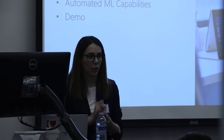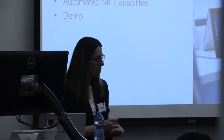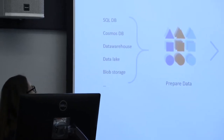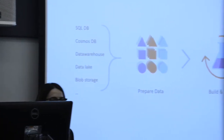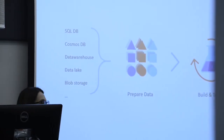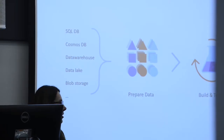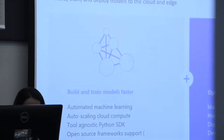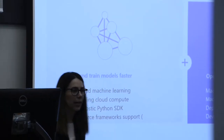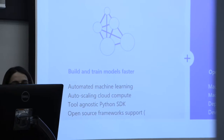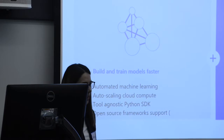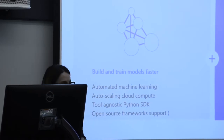I think everyone is familiar with the machine learning process: there are different stages — preparing your data, building and training machine learning models, and deploying your models. Azure Machine Learning Services is an end-to-end platform for AI and machine learning. It helps you build and train models in different ways; automated machine learning is what I'm focusing on today.